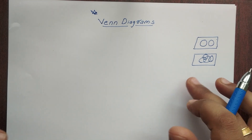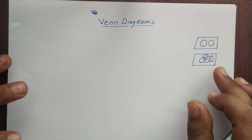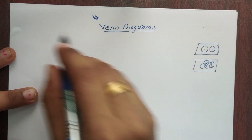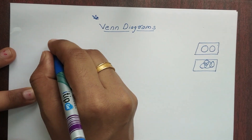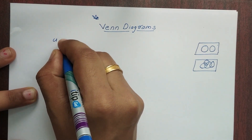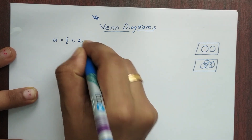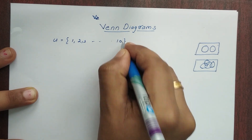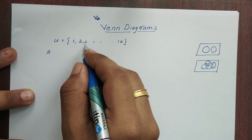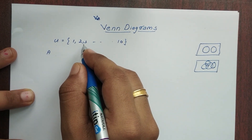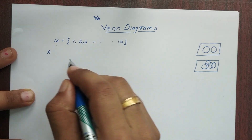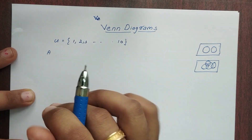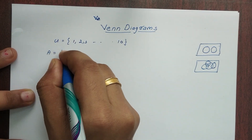Why do we use Venn Diagrams? We will start with the Universal set U. U is equal to {1, 2, 3, ... up to 10}. U is also a set. Now, if you have a set of elements, you will start with U.